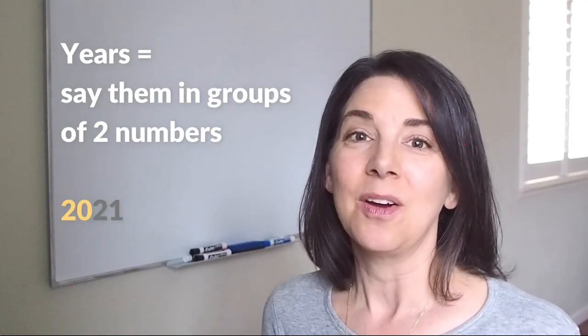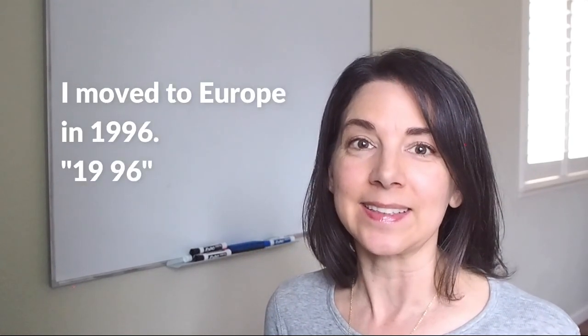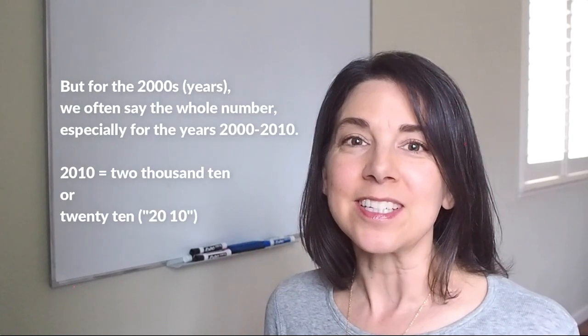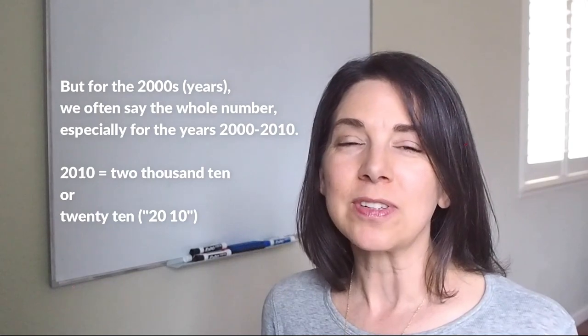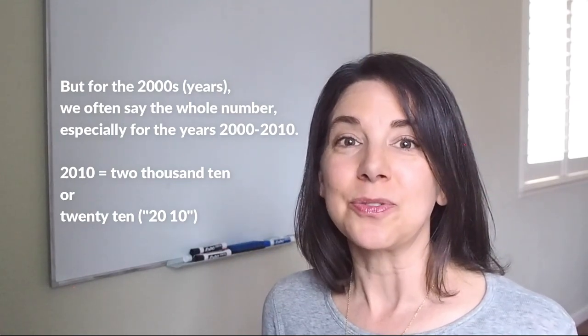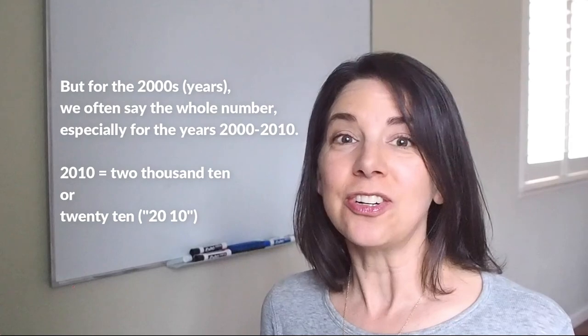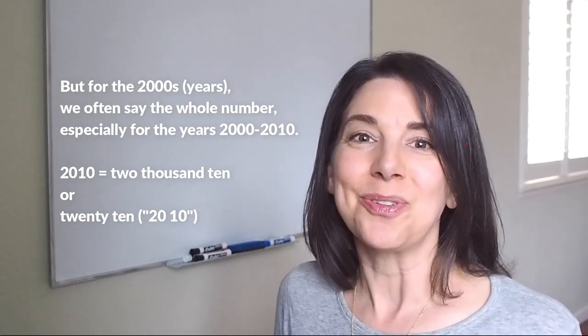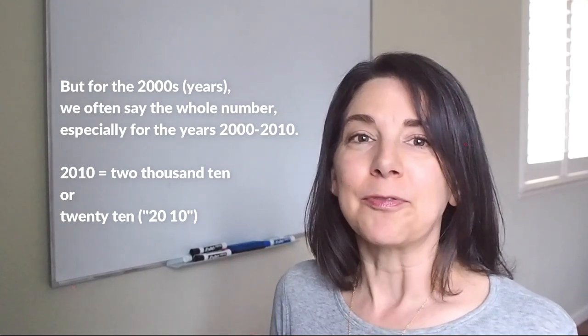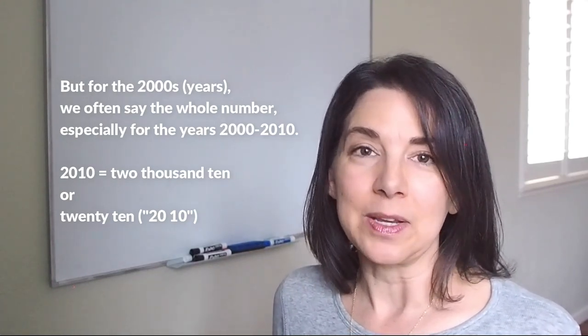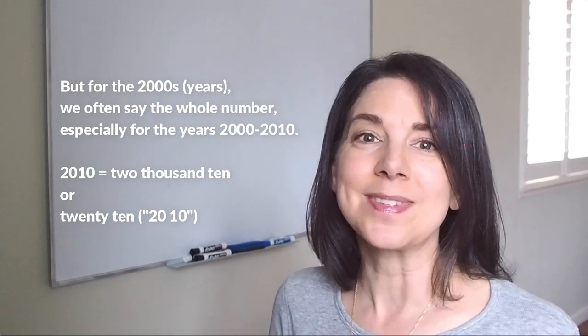For years, we say the years in groups of two numbers, like 2021, or 'I moved to Europe in 1996,' 'My son was born in 2011.' But for the 2000 years, for the first decade, we will usually say the whole number, like 2010. For example, 'My son was born in 2007,' or 'In the year 2000 I got a new job.' So for those first 10 years of the 2000s, we will often say 2000 blah blah. But for other years we usually say it in groups of two, like 1975 or 2021.